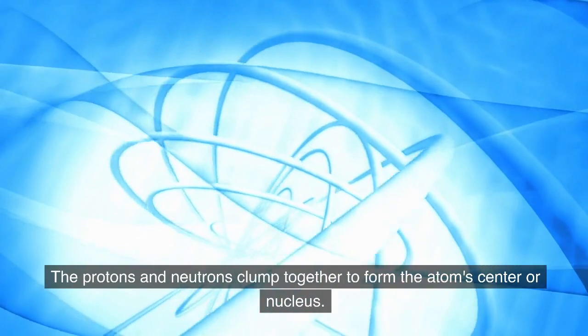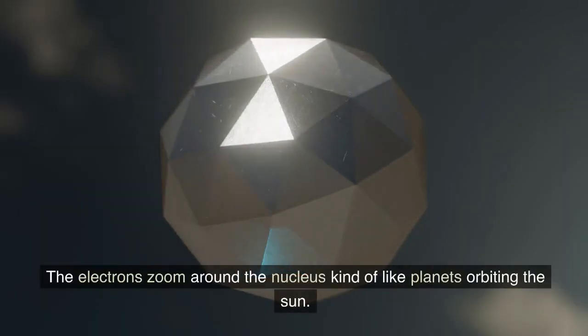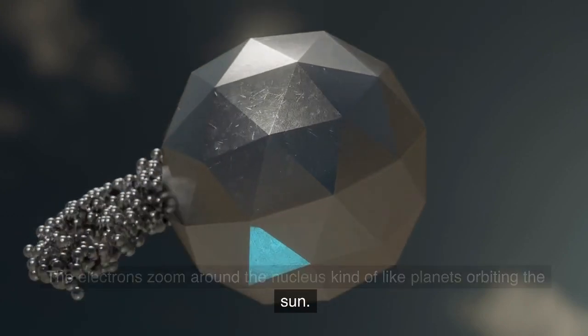The protons and neutrons clump together to form the atom's center or nucleus. The electrons zoom around the nucleus kind of like planets orbiting the sun.